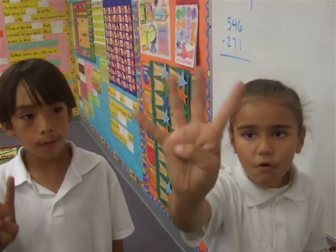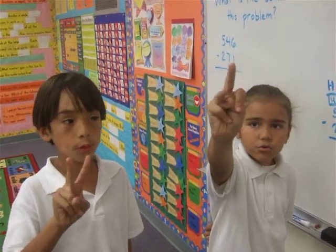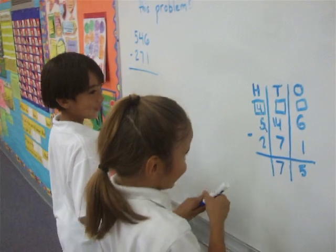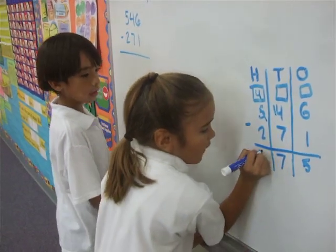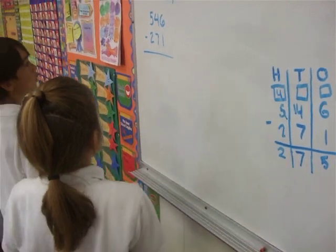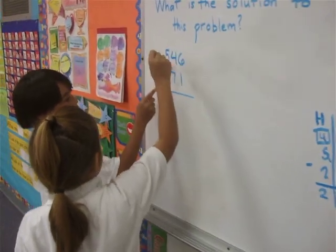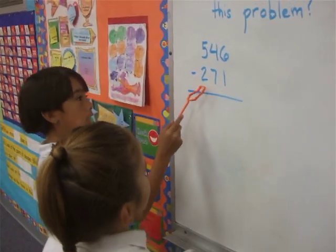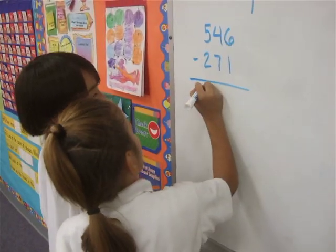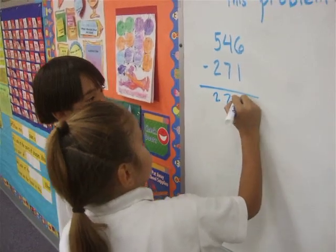Four minus two equals two. So 546 minus 271 equals 275.